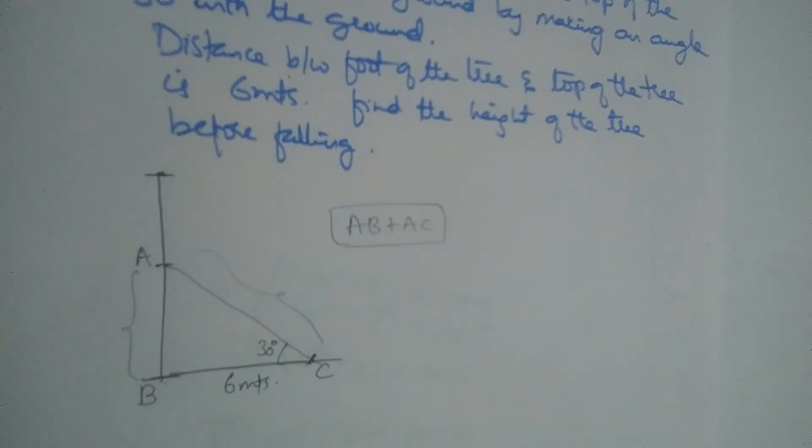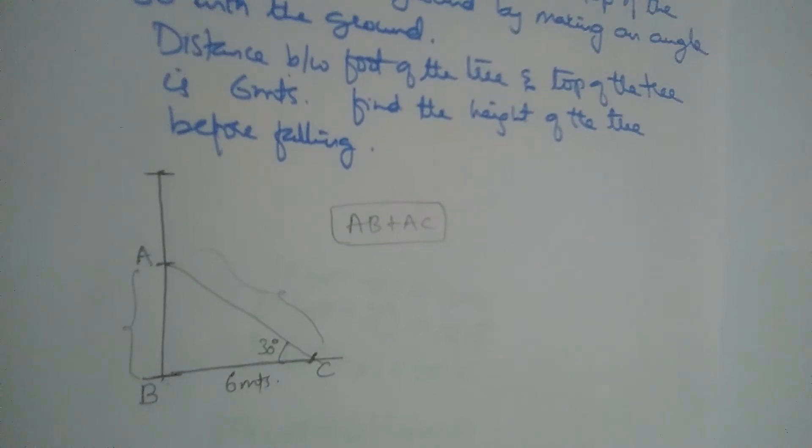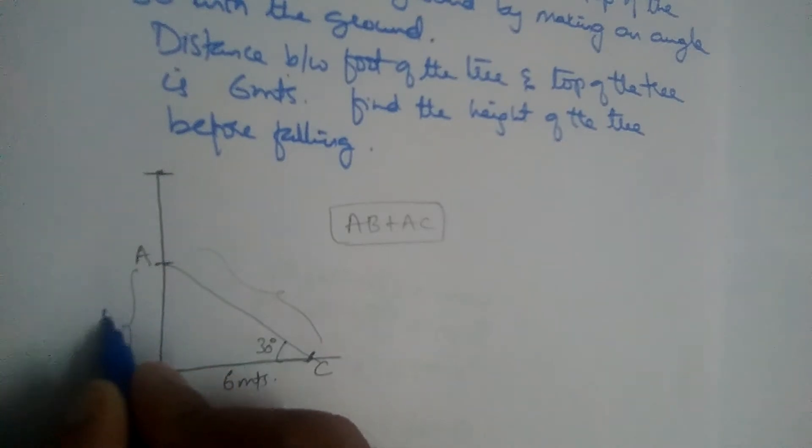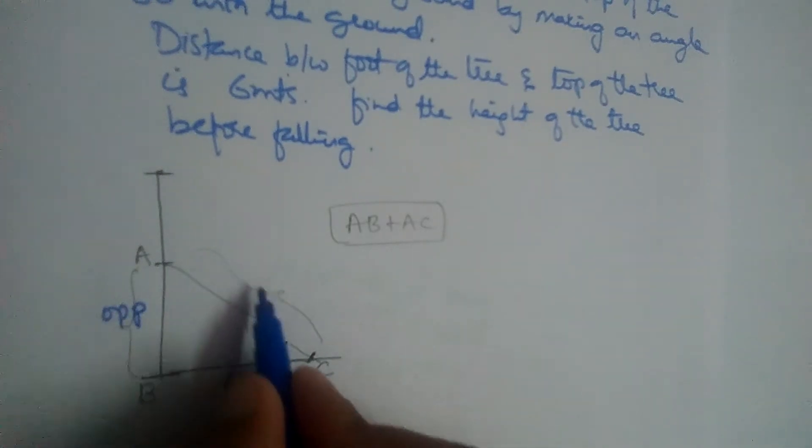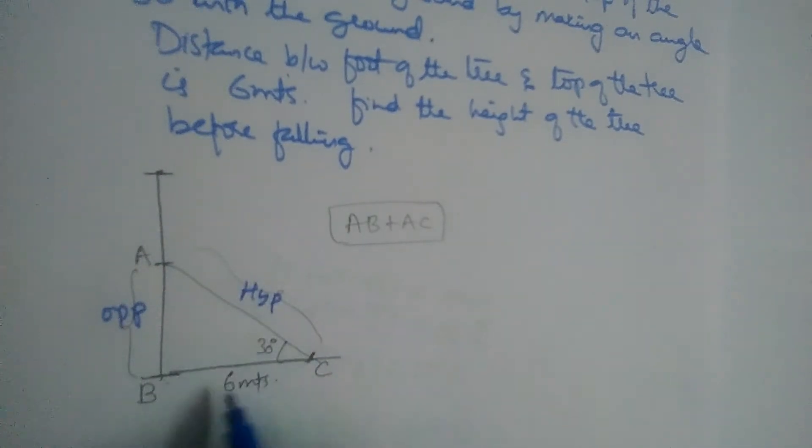Before falling. So to this angle, C AB is the opposite side and AC is hypotenuse, right, and BC is adjacent side.